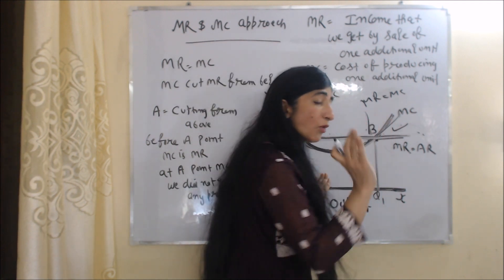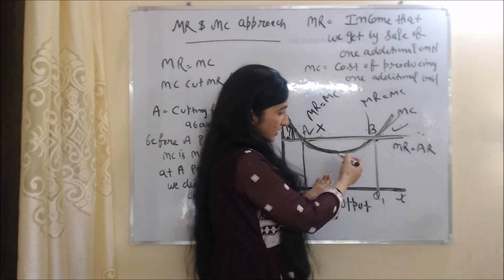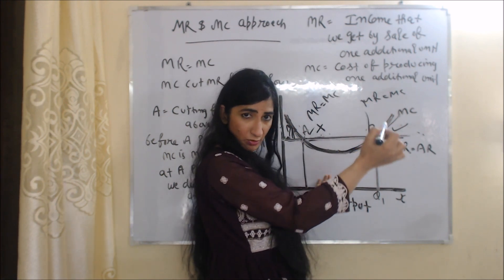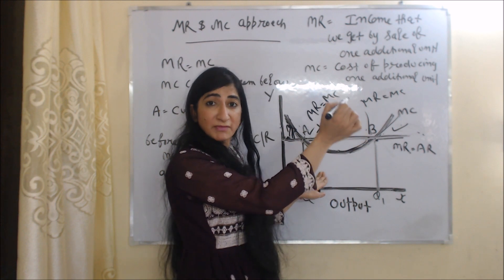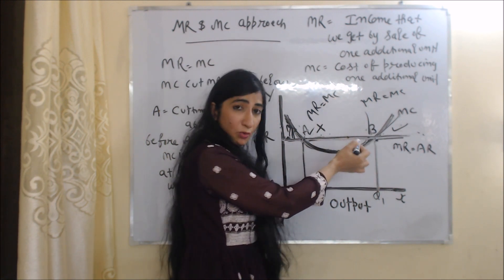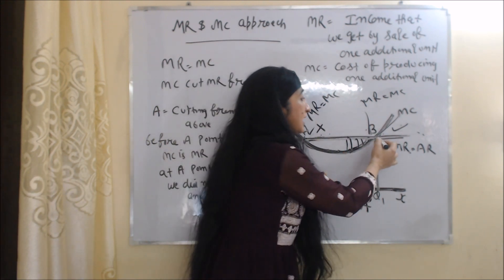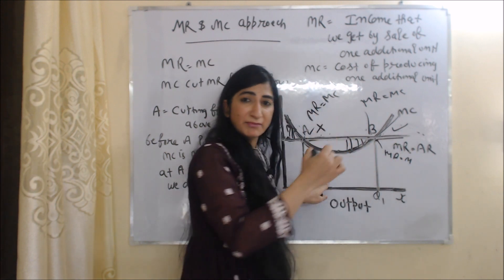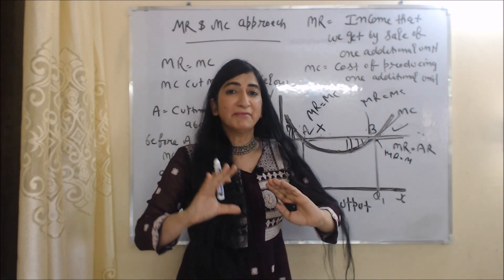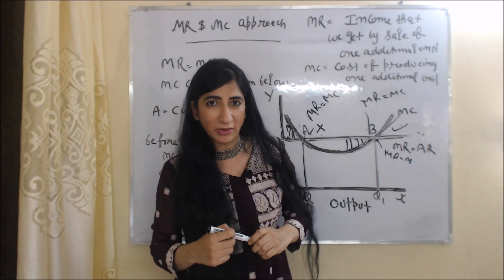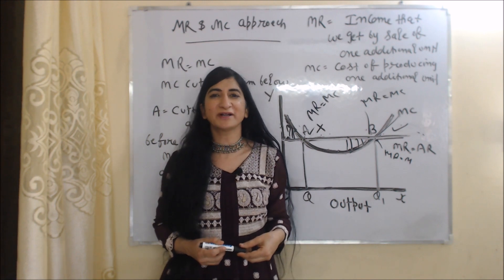At point B, both conditions are satisfied: MR is equal to MC, and MC cuts MR from below. Cutting from below means that before point B, marginal revenue was more than marginal cost — the revenue curve is above the cost curve, showing profit, meaning the firm earned a lot of profit before point B. That's why B is our stable equilibrium point. This is all about the TR, TC, MR and MC approach for determination of equilibrium under perfect competition market.